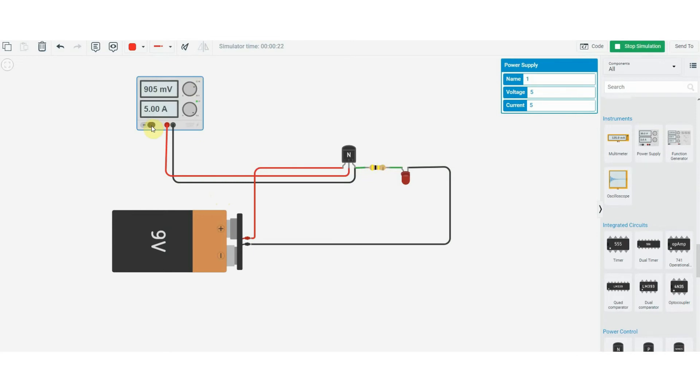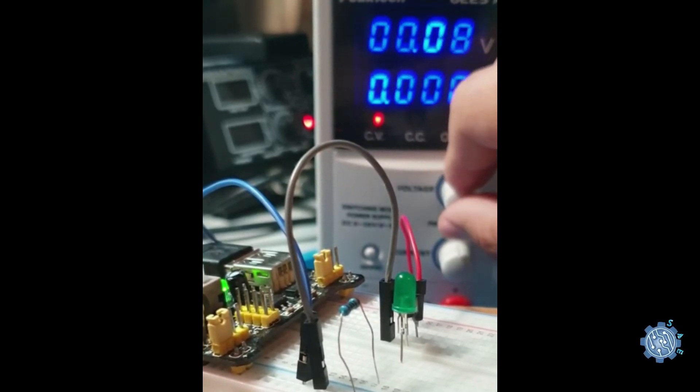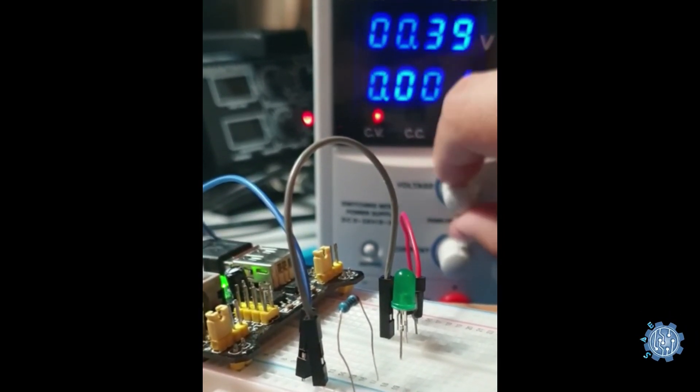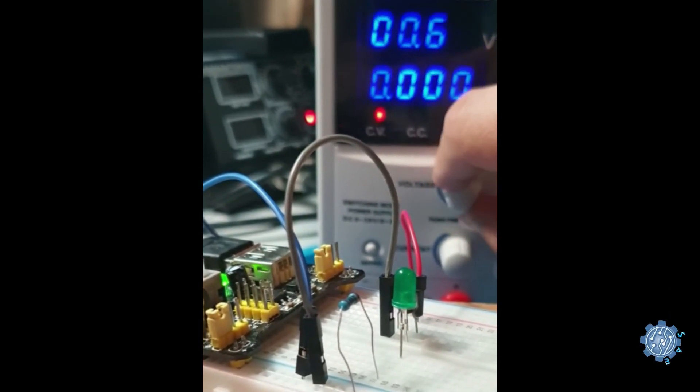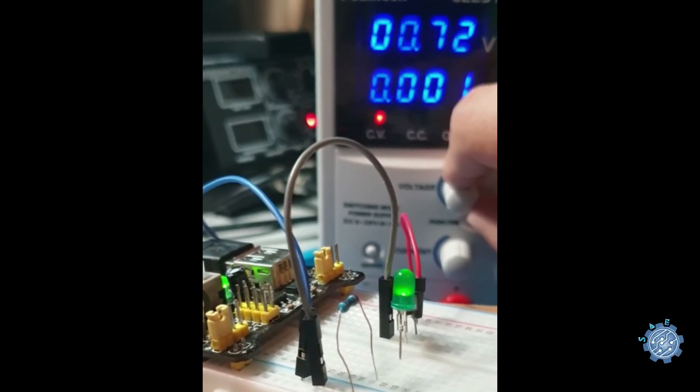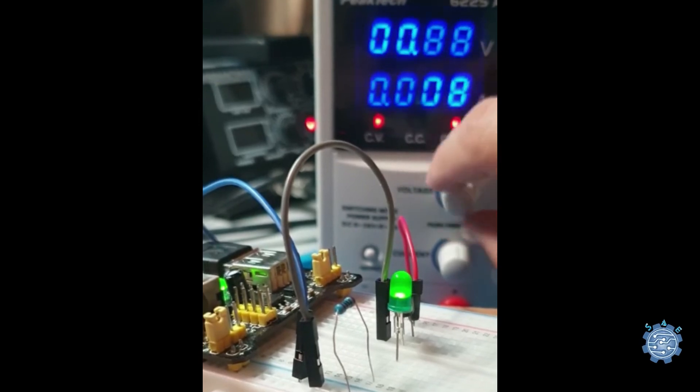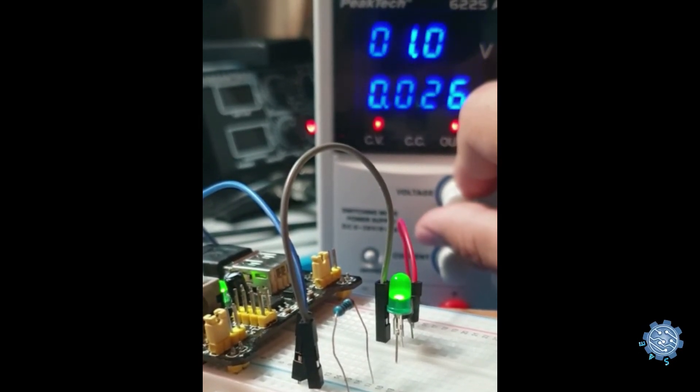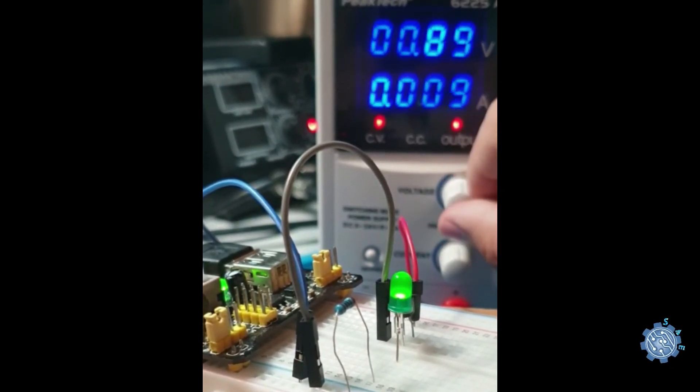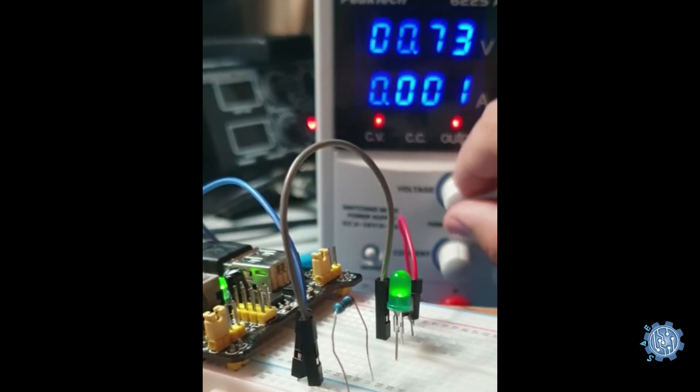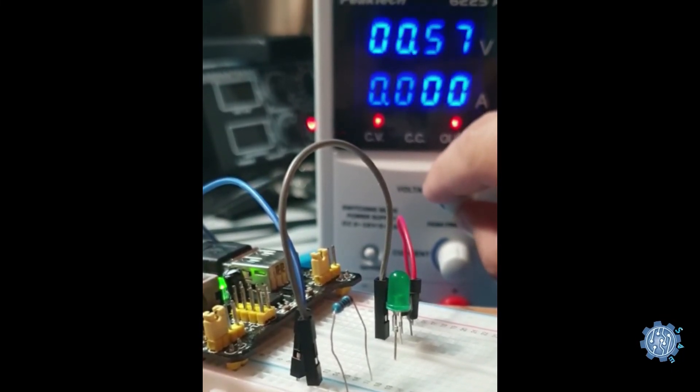This threshold voltage at which the transistor will start conducting will also be seen here with a real life example. If we supply the transistor base with less voltage than its threshold voltage, then the transistor will be blocked and will not allow the current to flow between collector and emitter. If this voltage will be exceeded, then the transistor will allow the current flow.